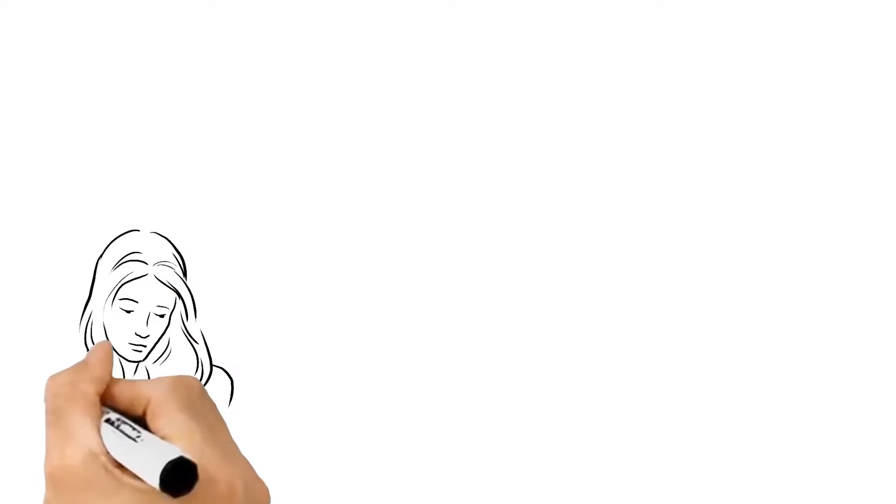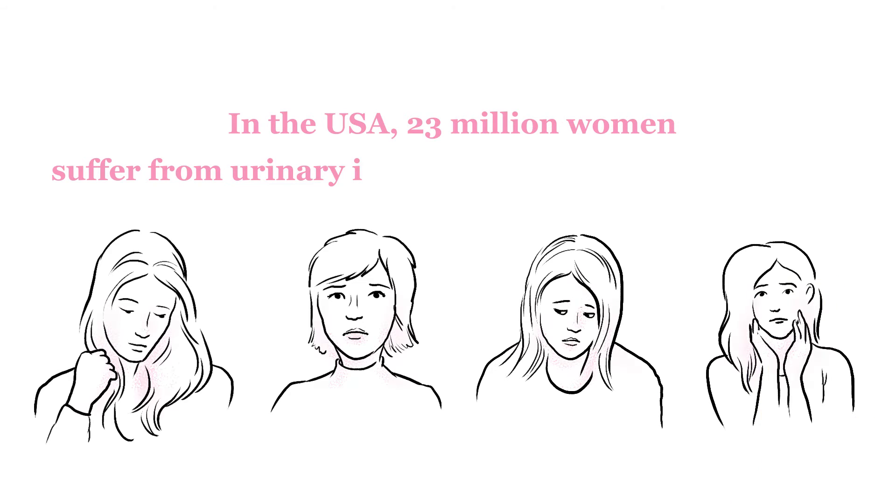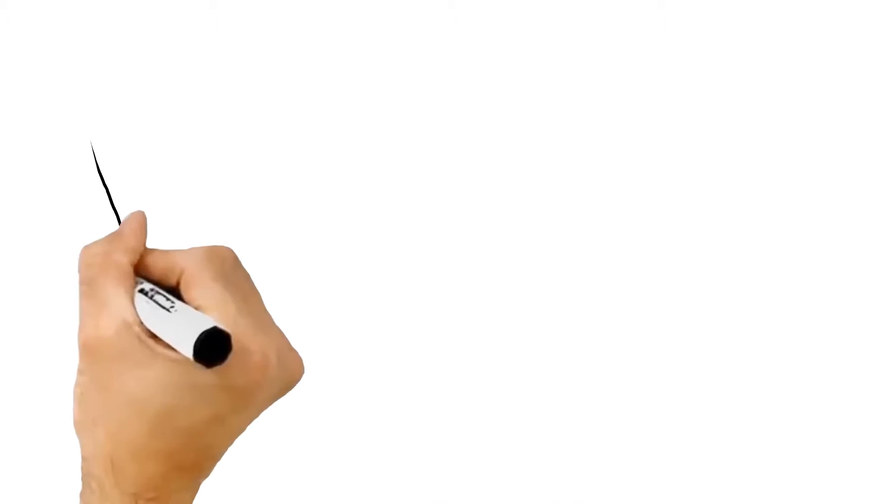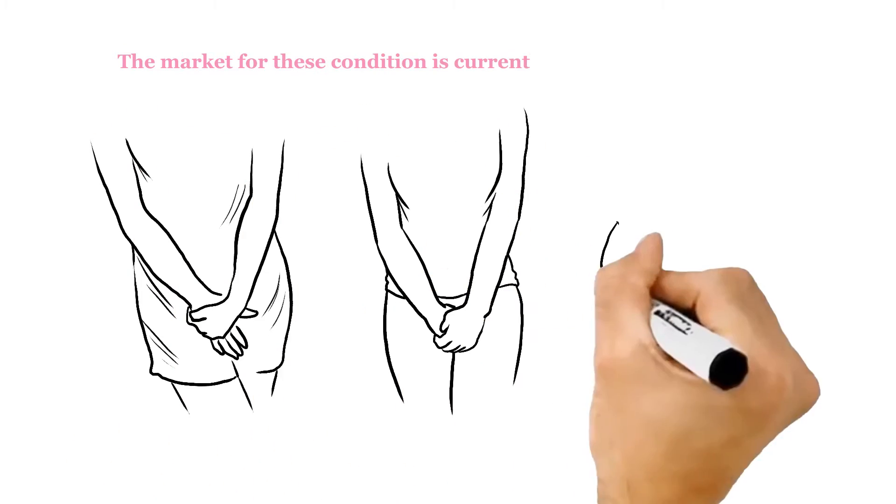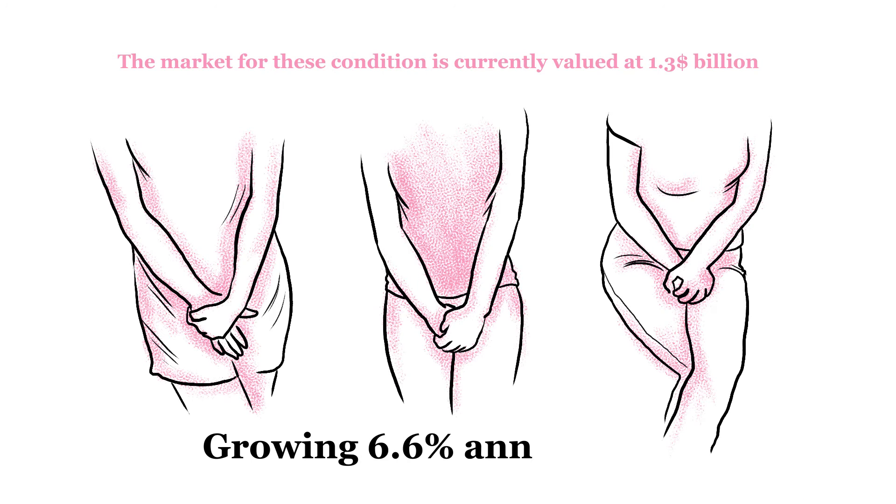The company's initial target market is the USA, where some 23 million women suffer from urinary incontinence and genital prolapse. The therapies market for these conditions is currently valued at $1.3 billion and growing 6.6% annually.